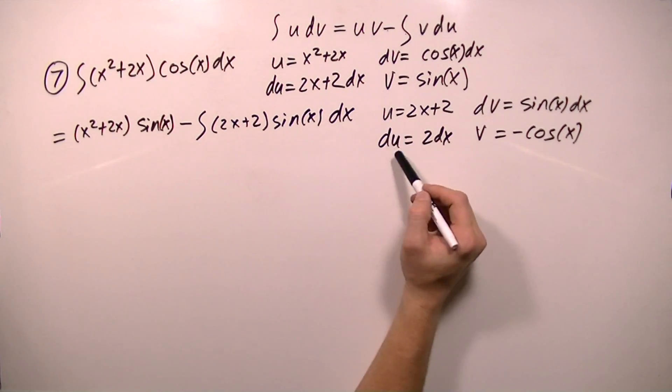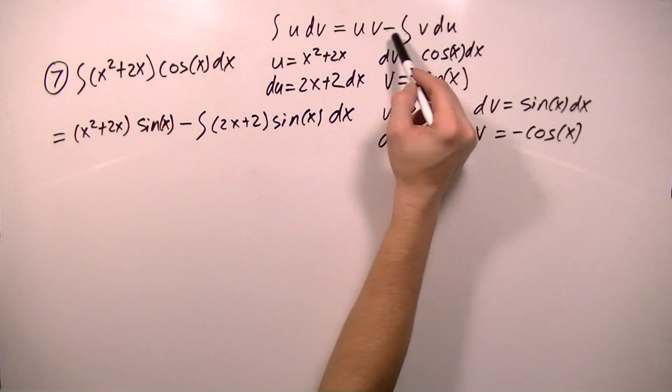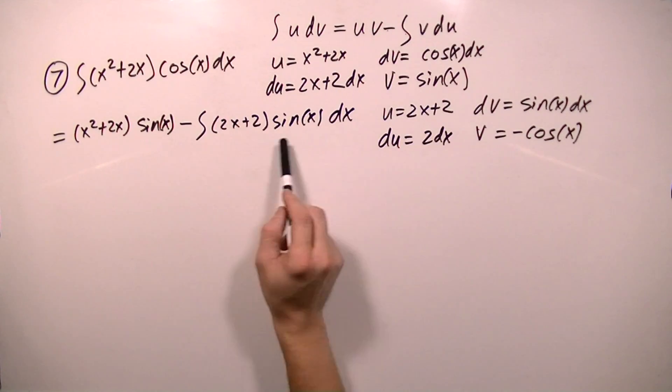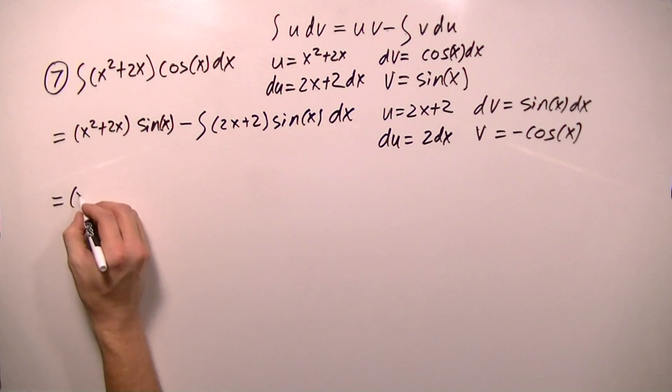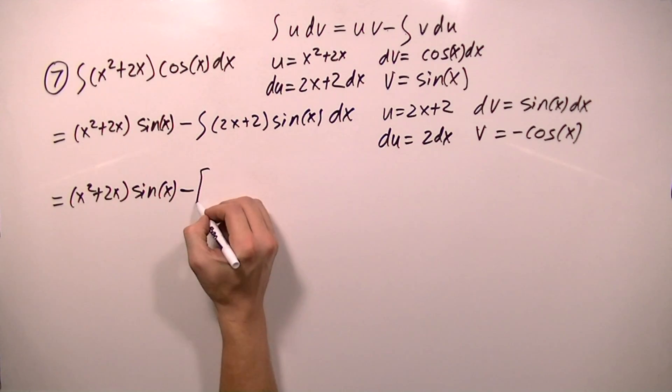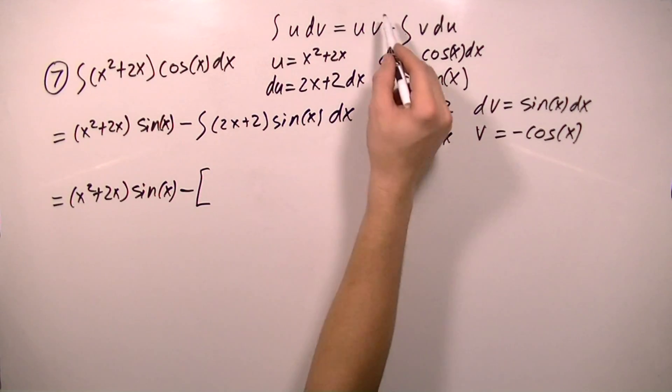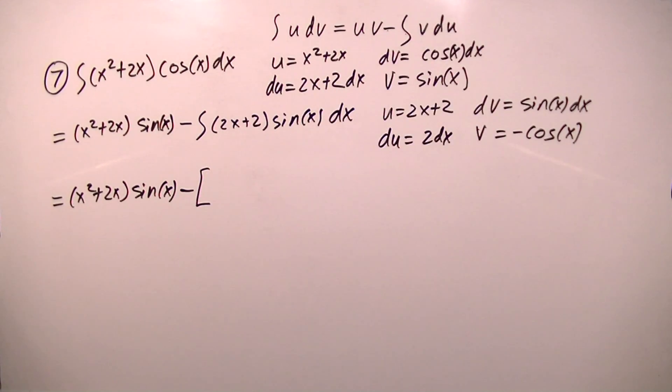So now that I have my values for u, du, dv, and v, I can make these substitutions into our formula for integration by parts for this integral. So I'm going to start by rewriting this, x squared plus 2x, sine x, minus, and I'm going to start with a bracket here, because I'm replacing this integral with this formula. And I want to make sure that this negative gets distributed to every term inside of these brackets.